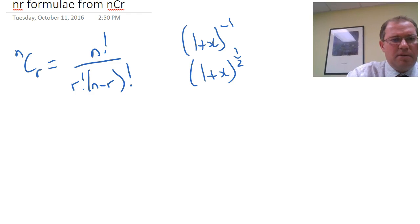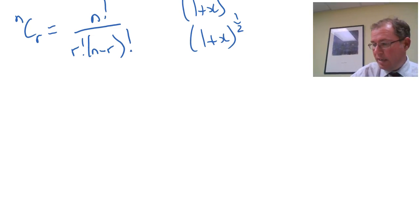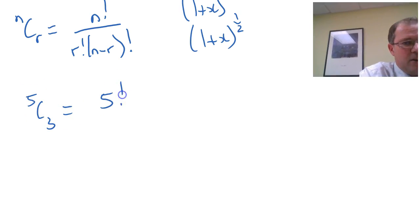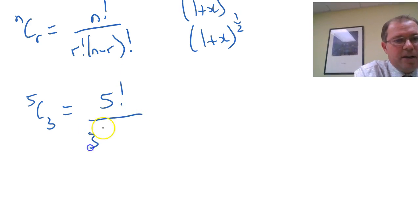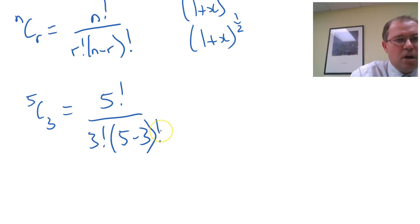So let's have a look and it's always easy to start off with a number example. So I'm going to choose 5 choose 3. So if we consider 5 choose 3, we know that that's 5 factorial over 3 factorial 5 minus 3 factorial using the n choose r formula.